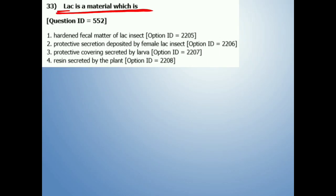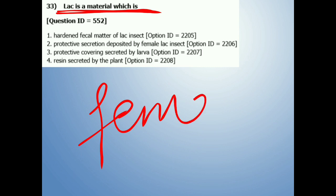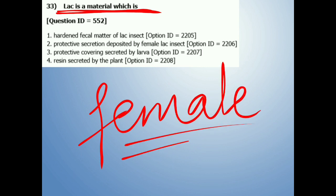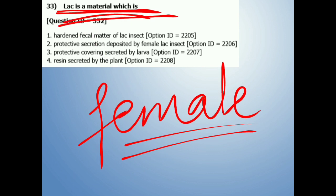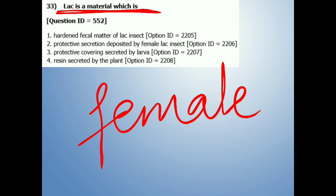Question number 33: Lac is a material which is? Basically, lac comes from lac insects. The female members of this family — female lac insects — secrete a substance to protect their eggs, which we call lac. We use it for commercial purposes: to make waxes, as an artificial dye, in juices, drinks, or candy as a coloring agent, and it also has medicinal values.